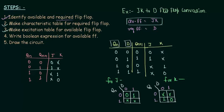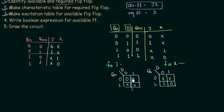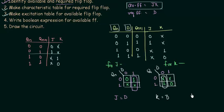For J, grouping the single 1: Qn is changing from 0 to 1 while D stays fixed, so J equals D. For K, grouping the single 1: Qn changes from 0 to 1 and D is 0, so K equals D complement. We now have the Boolean expressions for the available JK flip-flop: J = D and K = D'.